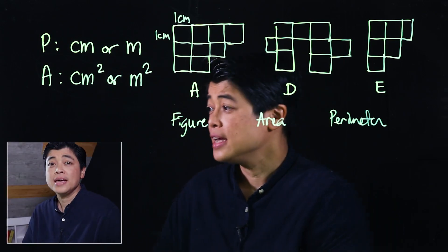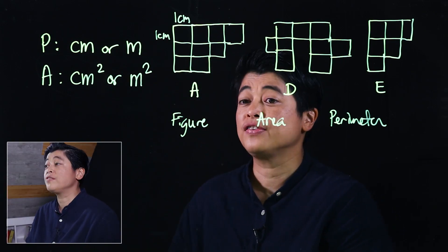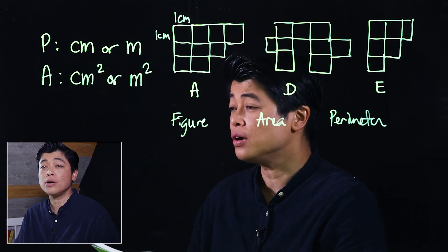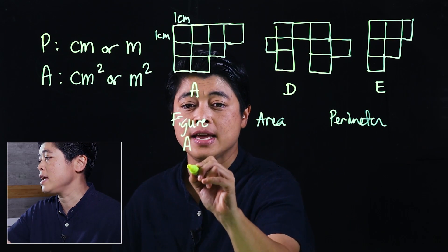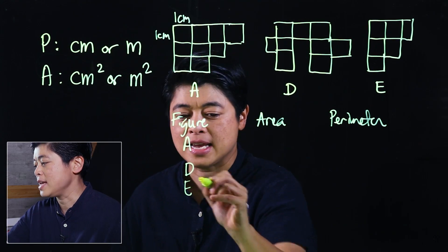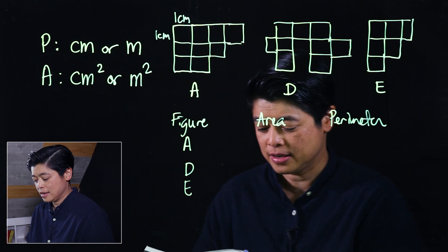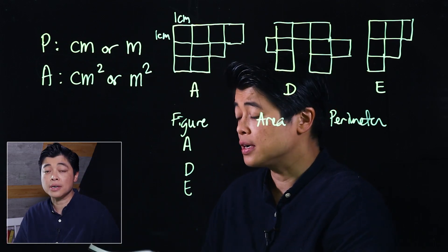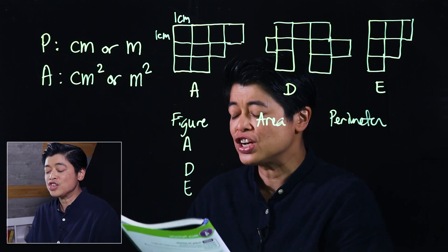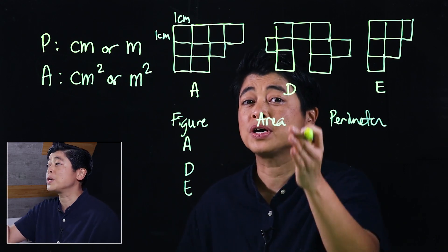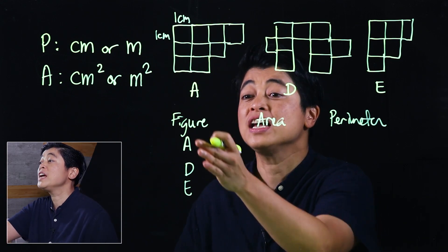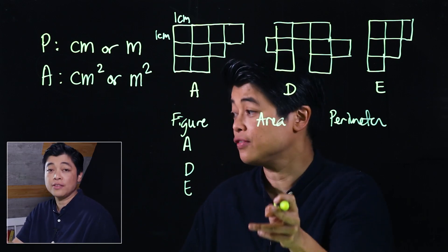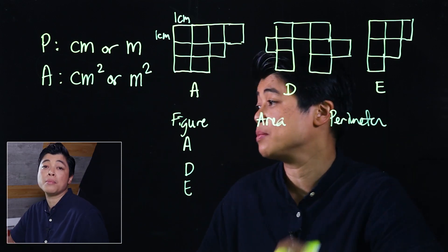The problem asks us to fill out a table, but we're only filling it out for the figures I've drawn. It says to find the area and the perimeter. My suggestion is to do it per figure — look for the area of all the figures first, and then go to the perimeter.